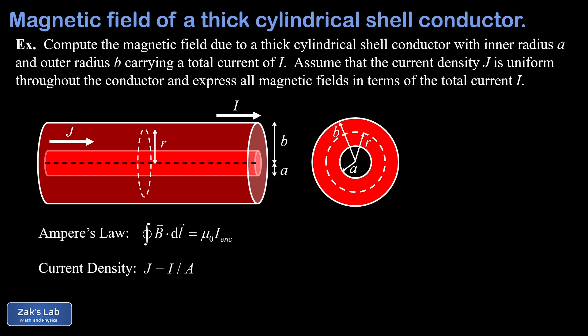The Amperian loop has a radius we call little r. This loop is chosen to share the symmetry of the problem, where we expect the magnetic field to swirl around the symmetry axis concentrically by a right-hand rule. We choose Amperian loops centered on the symmetry axis, and the loop shown here has a radius between a and b — the most interesting case where we compute the field inside the conductive material.